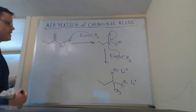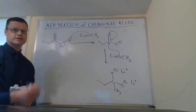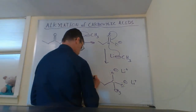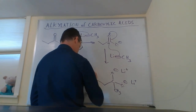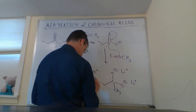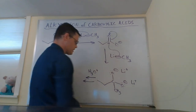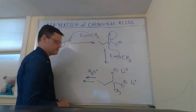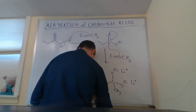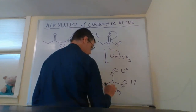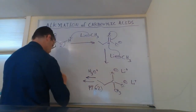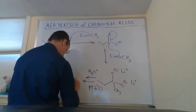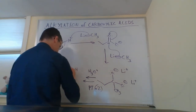That's the first step of this multi-step transformation. Then what we're going to do is add H3O+ — some strong acid in water — and we're going to do two proton transfers. We're going to protonate both of those oxygens, and that gets us to the gem-diol.